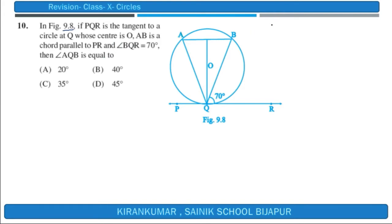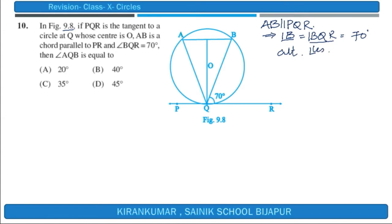Since AB is parallel to PQR, angle ABQ equals angle BQR, which equals 70 degrees, because they form alternate angles. OQ is a radius, so it is perpendicular to the tangent PQR. Therefore angle OQB equals 90 minus 70, which is 20 degrees.